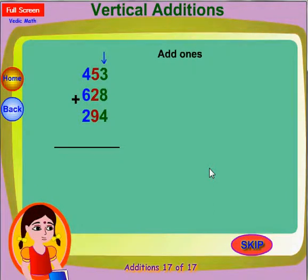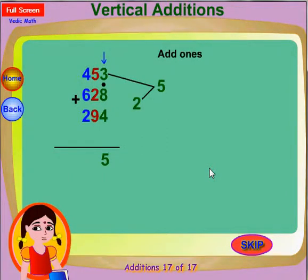4, 8 and 3. First add 4 and 8. You get 12. 12 is 10 plus 2. So put a dot on 8 to indicate 10, and add 2 to 3. You get 5. Write 5 in the ones place in answer.